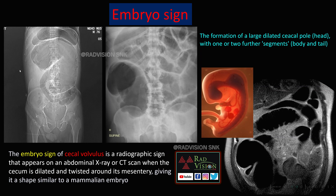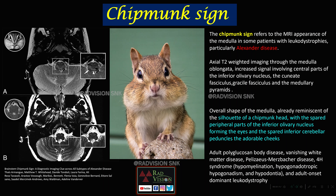Next is the Embryo Sign. Here you can see a dilated cecal loop — this is a dilated cecum with twisted mesentery, typically seen on abdominal radiographs in a case of cecal volvulus. The large dilated cecal pole mimics the head of the embryo, and the other segments mimic the body and tail of the embryo. The Embryo Sign is classically seen on abdominal radiographs in cecal volvulus. It can also be seen on MR imaging, which also typically shows cecal volvulus.